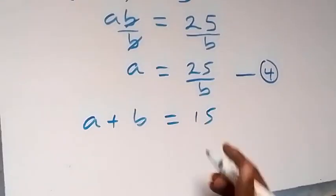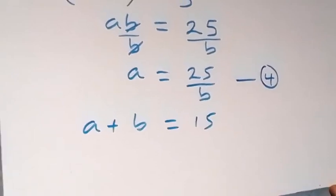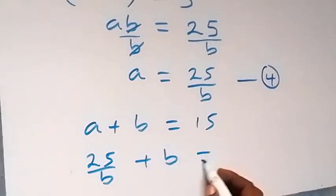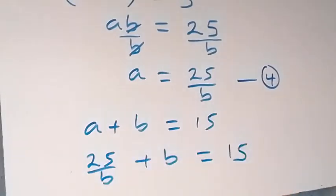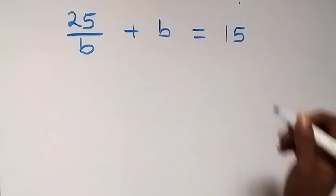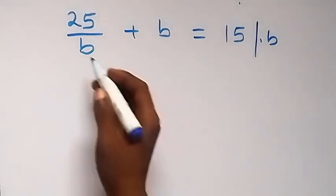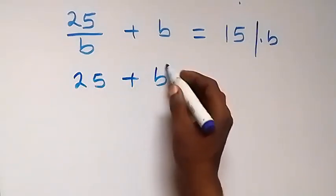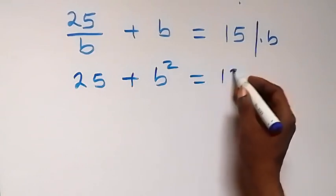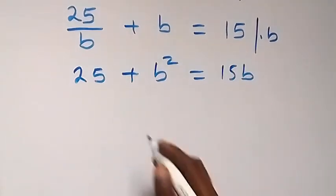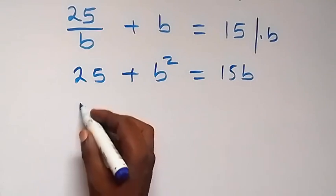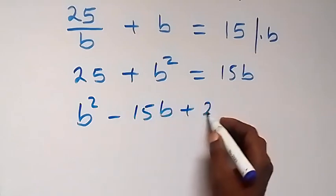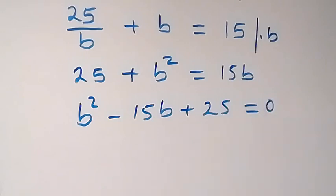When A is 25 over B, this gives us 25 over B plus B equals 15. Multiplying through by B, B cancels and we have 25 plus B squared equals 15B. Rearranging to form a quadratic equation, we have B squared minus 15B plus 25 equals 0.